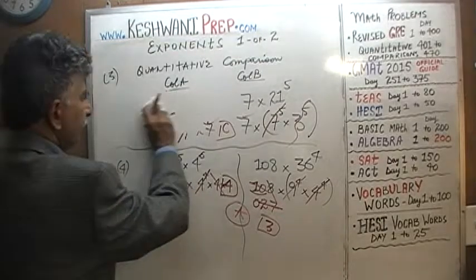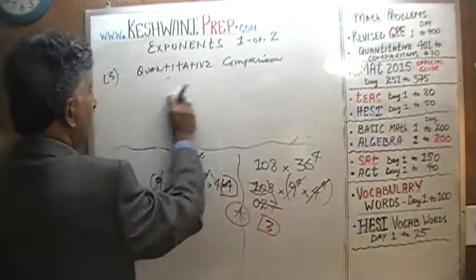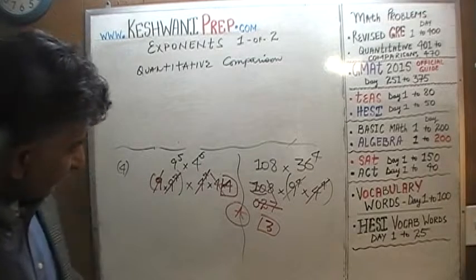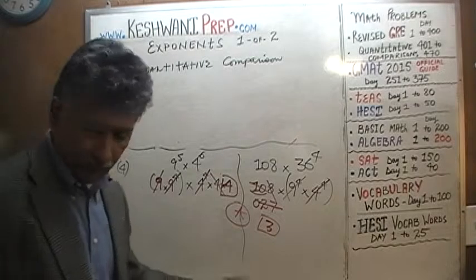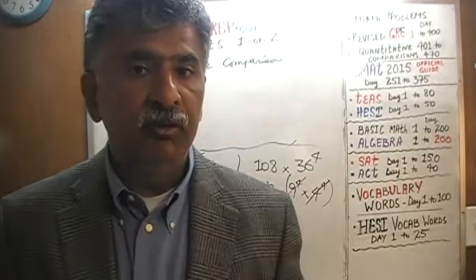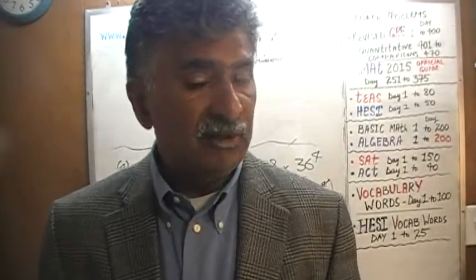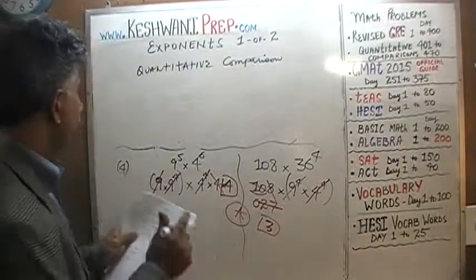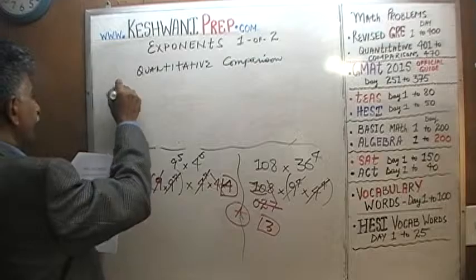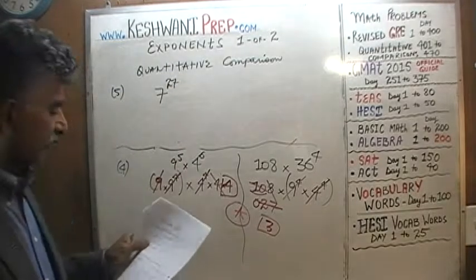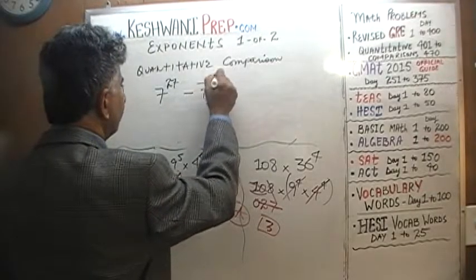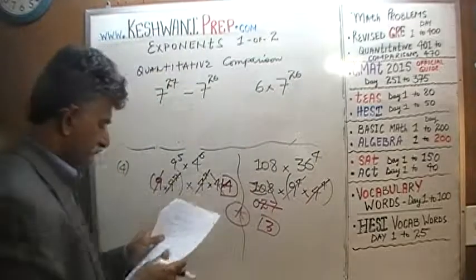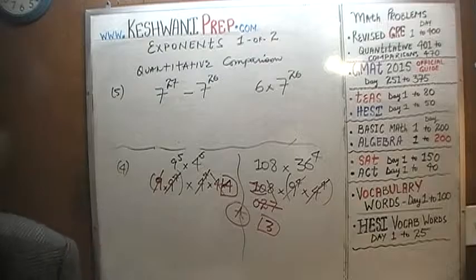Let's do number 5. You have to be able to do these problems without tedious long calculations, because the exam is testing how quickly you can think — not who is the biggest nerd. Here's number 5: 7 raised to 27 minus 7 raised to 26 versus 6 times 7 raised to 26. Pause the video and do it yourself.